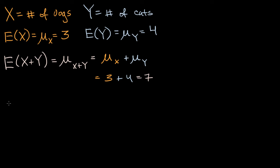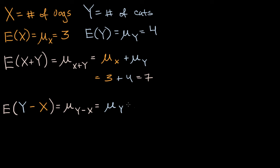Similarly, if I were to ask about the difference — how many more cats in a given day would I expect to see than dogs — so the expected value of y minus x. Intuitively, you might say: if the expected value of the sum is the sum of the expected values, then the expected value or the mean of the difference will be the difference of the means. And that is absolutely true. So the mean of y minus x is equal to the mean of y minus the mean of x, which in this particular case is four minus three, equal to one. So I would expect to see on a given day one more cat than dogs.